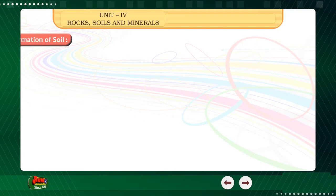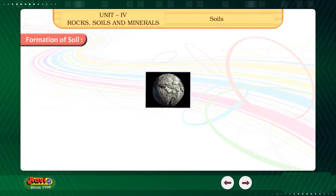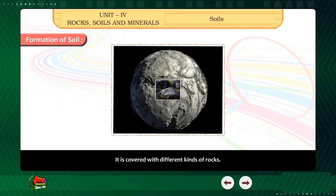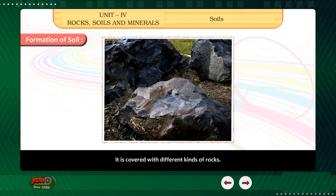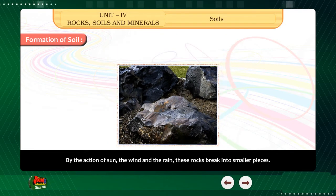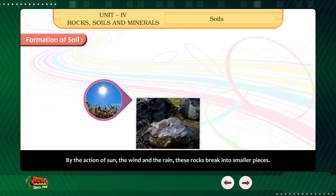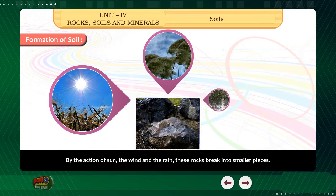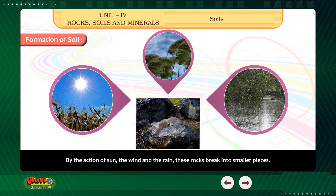Formation of Soil. In the beginning, there was no life on the earth. It was covered with different kinds of rocks. By the action of the sun, the wind and the rain, these rocks break into smaller pieces.